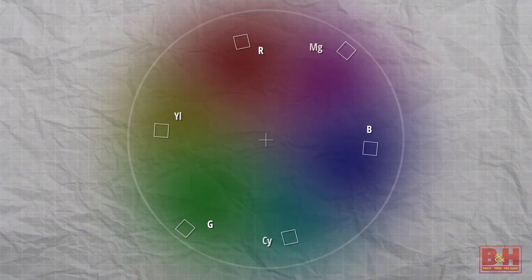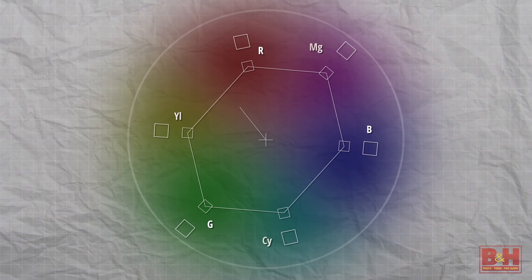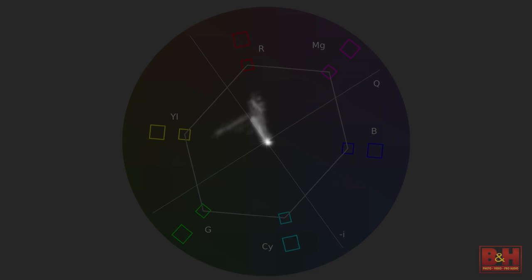These targets represent 75 saturation, which is considered maximum saturation for broadcast. This line here represents skin tone and works by honing in on the color of the blood under someone's skin. By isolating your subject's skin tone and aligning it here, you can always be sure the color is accurate.